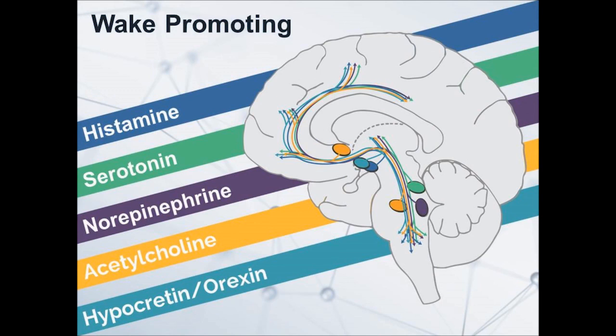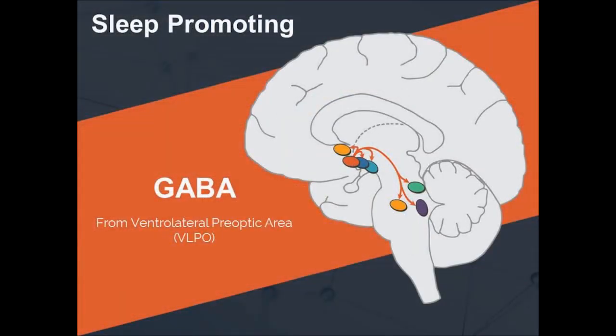There are multiple neurotransmitter systems that promote wakefulness, including histamine, serotonin, norepinephrine, acetylcholine, and hypocretin or orexin. These systems have overlapping projections widespread throughout the brain. This redundancy indicates the importance of wakefulness and the need for a backup system. In the case of narcolepsy with cataplexy — or type 1 narcolepsy — the redundancy does not perform perfectly when hypocretin or orexin is lost. Although there are five wake-promoting neurotransmitters, there is only one neurotransmitter system that promotes sleep: this is GABA.